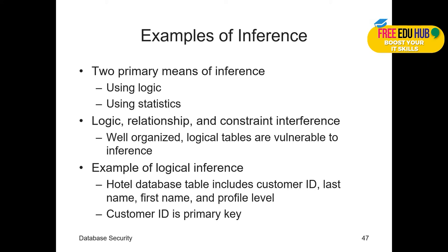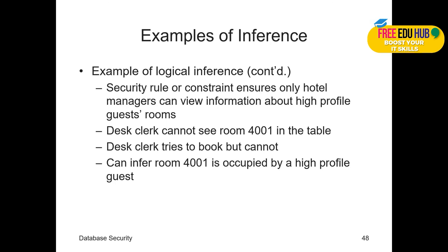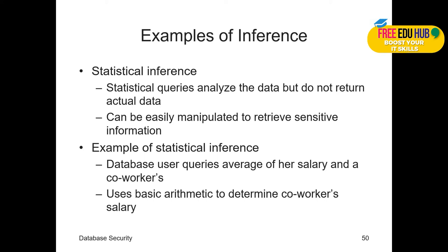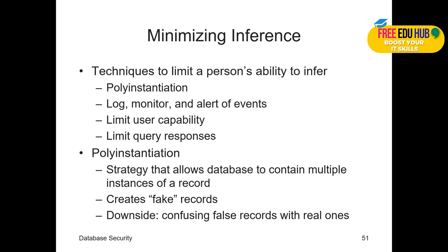There are two primary means of inference: logical inference and statistical inference. Logical inference uses logic, relationships, and constraints in well-organized databases — the hotel example is a case of logical inference, where the customer ID is the primary key and room 4001 cannot be booked because it is already occupied. Statistical inference involves running queries that analyze data without returning actual values; another table with fake values can be created, but these can still be manipulated. For example, a user queries the average salary of co-workers and uses arithmetic to determine a specific co-worker's salary.